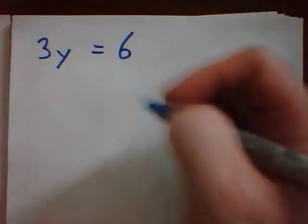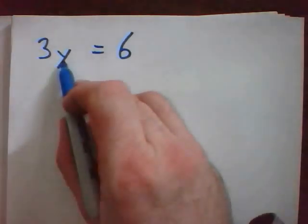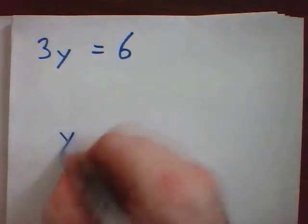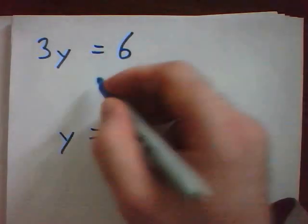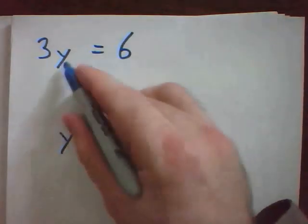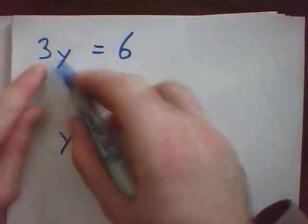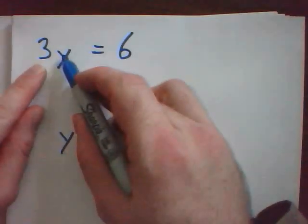Here's our first example. Our goal is to get y by itself in the end. This is what we're looking for at the end of our question. If I take a look at this question, the first thing I want to try to do is simplify the question. There's 3 times y. I can't actually multiply, so I have to move on. I'm going to try to get y by itself.